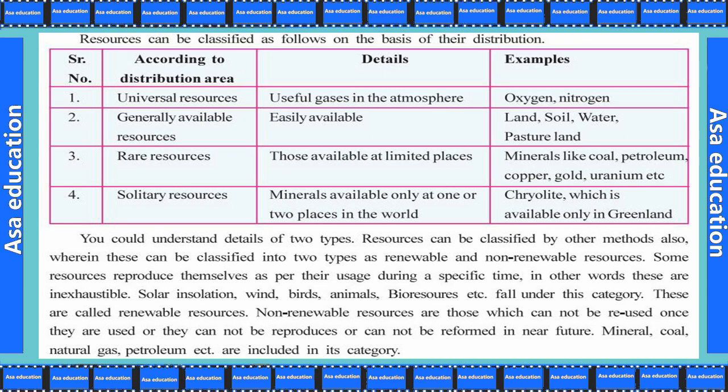Resources can also be classified into two types: renewable and non-renewable resources. Some resources reproduce themselves as per their usage during a specific time — in other words, they are inexhaustible. Solar insolation, wind, birds, animals, and bioresources fall under this category and are called renewable resources. Non-renewable resources are those which cannot be reused once they are used, cannot be reproduced, or cannot be reformed in the near future. Minerals, coal, natural gas, and petroleum are included in this category.